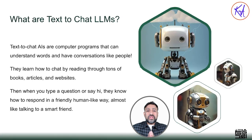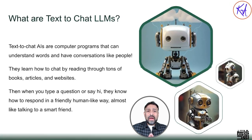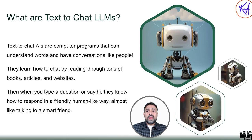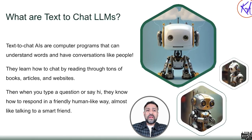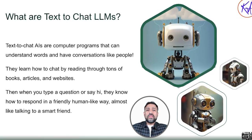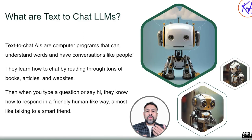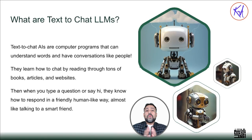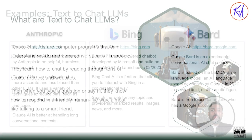Text-to-chat large language models, LLMs, are trained on vast web data. They are also called conversational AI since they keep track of the context of the conversation and respond accordingly. They respond in a friendly, human-like way — much like talking to a smart friend. So what are the different types of the most popular text-to-chat LLMs in the market?